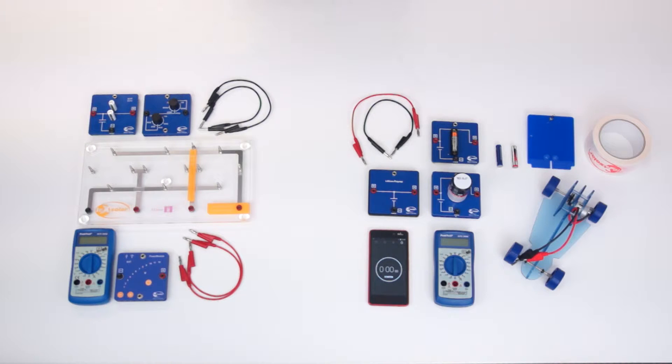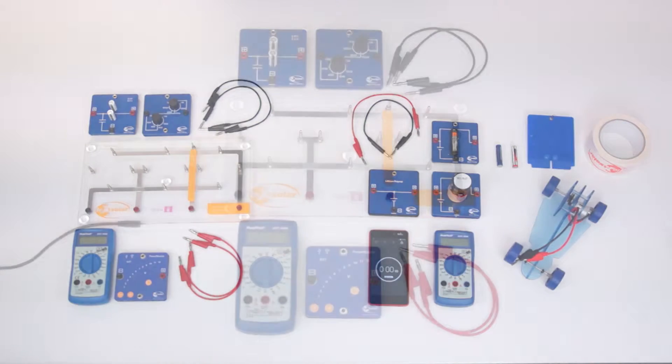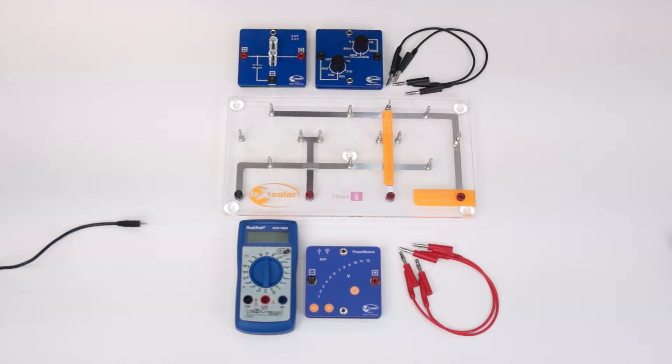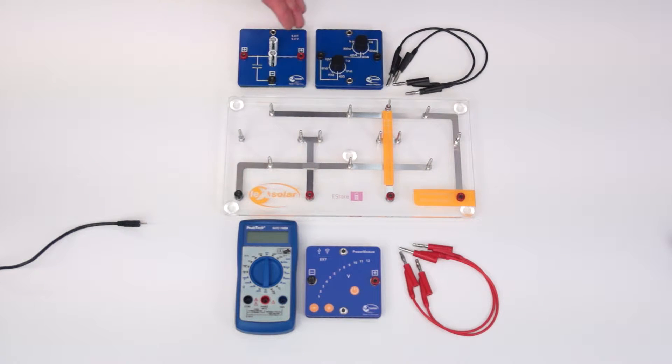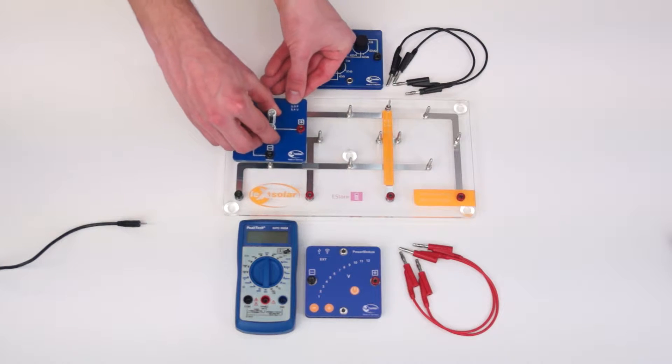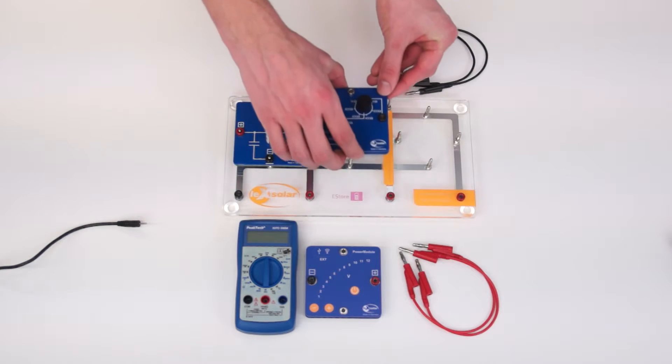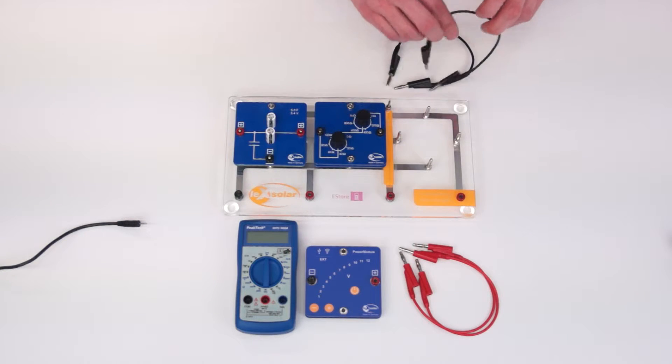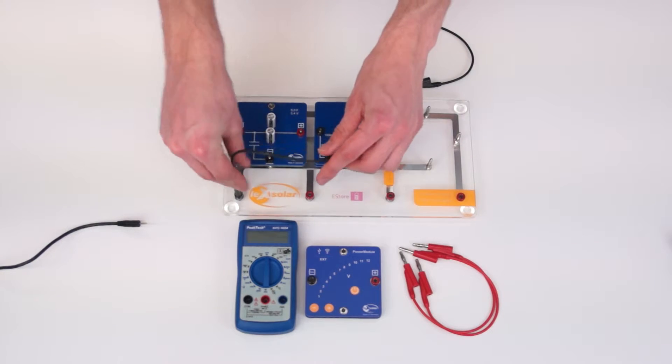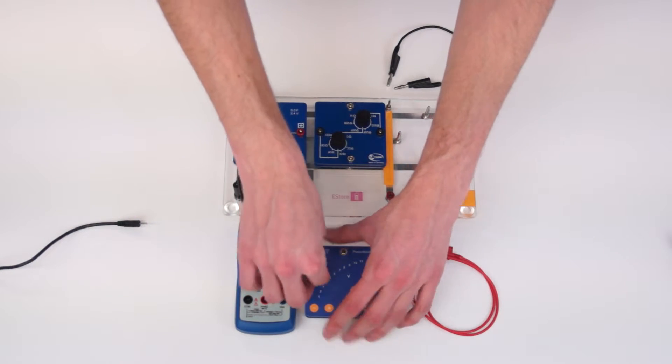Now we have all the components for the preparation of our experiment. First we need to charge the capacitor. To this end, we are building a common charging circuit from a voltage source, capacitor, and resistor. The capacitor and the potentiometer are inserted into the left and middle slot of the base unit. On the potentiometer, we set a resistance of 20 ohms. Thereafter, the circuit is closed by the power module and the power supply is ensured.